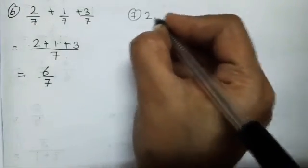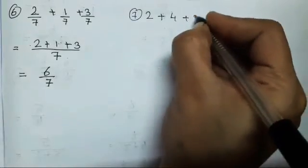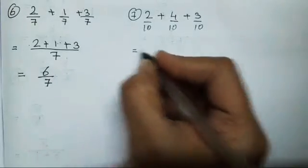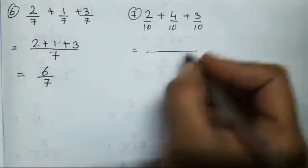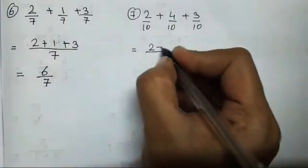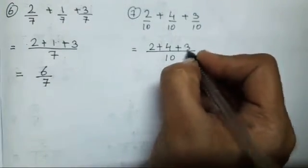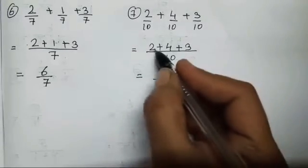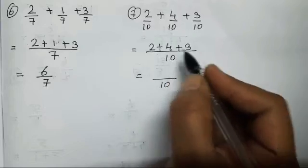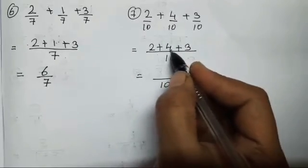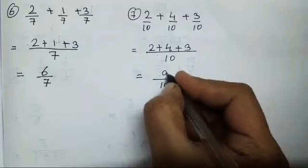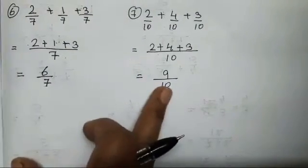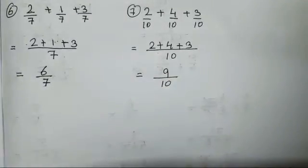The seventh sum is 2 upon 10 plus 4 upon 10 plus 3 upon 10 — all three fractions have 10 as denominator. When the denominators are same we write it once. 2 plus 4 plus 3: 2 plus 4 is 6, and 6 plus 3 is 9 upon 10. Now 9 and 10 cannot be reduced or divided, so we will keep it as it is.